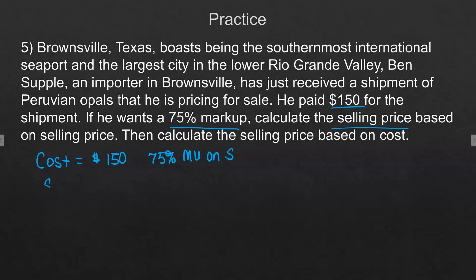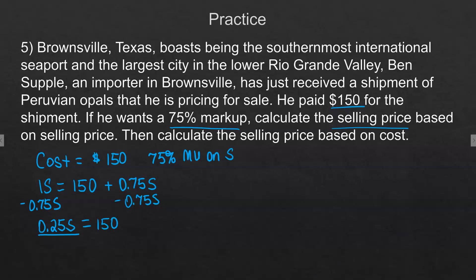We're going to write out the equation. We're going to subtract — remember this is 1s — we subtract 0.75s, and that gives us 0.25s equals 150. We divide by 0.25 to solve, and we find that the selling price would be $600.